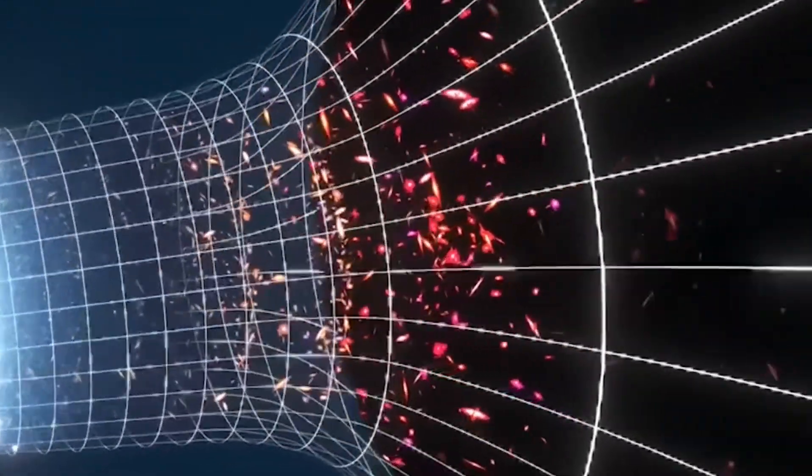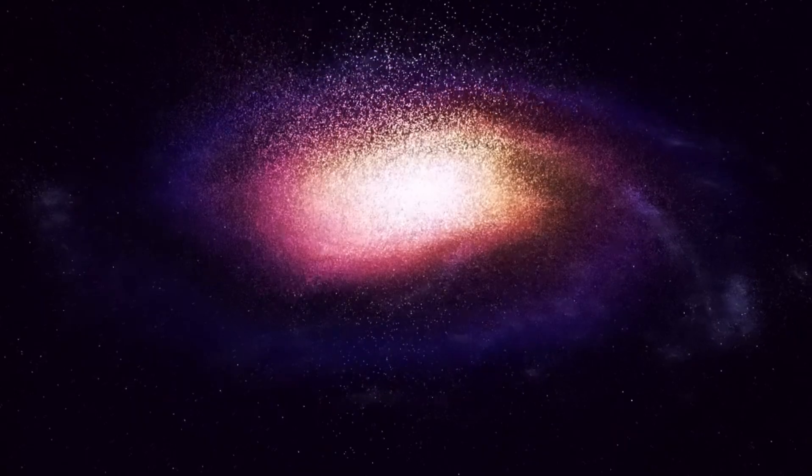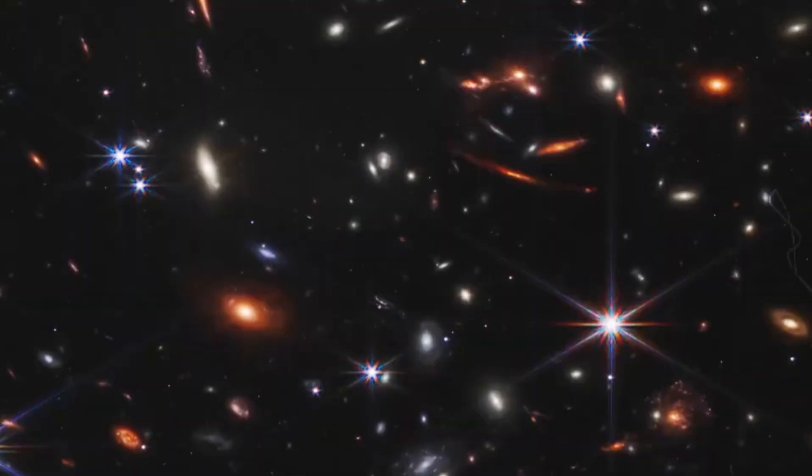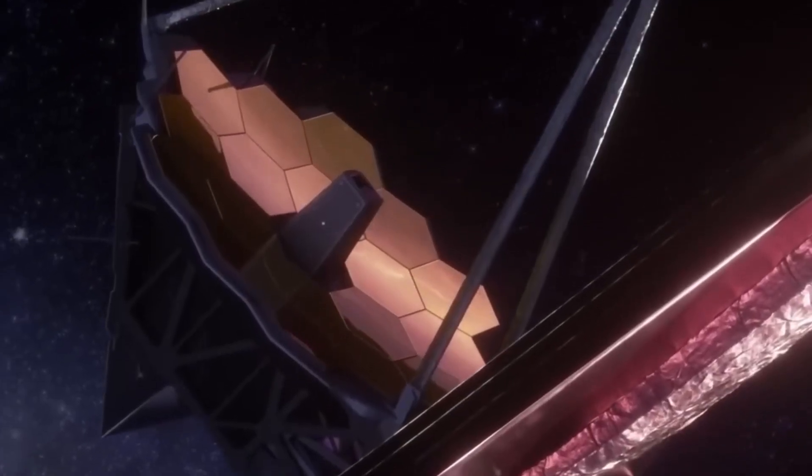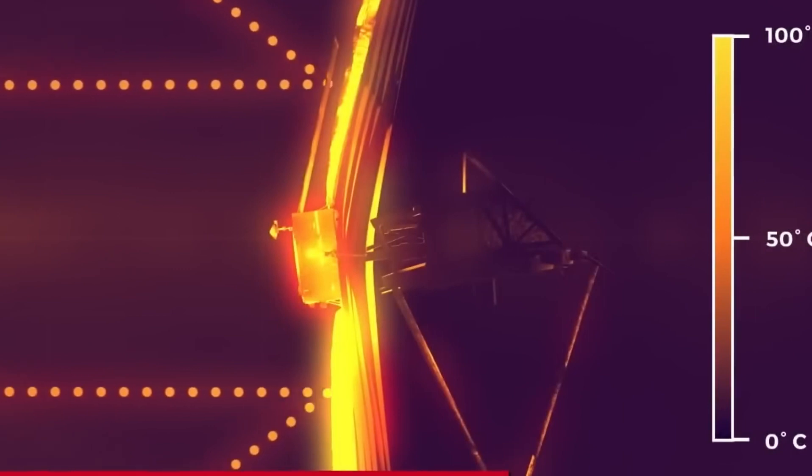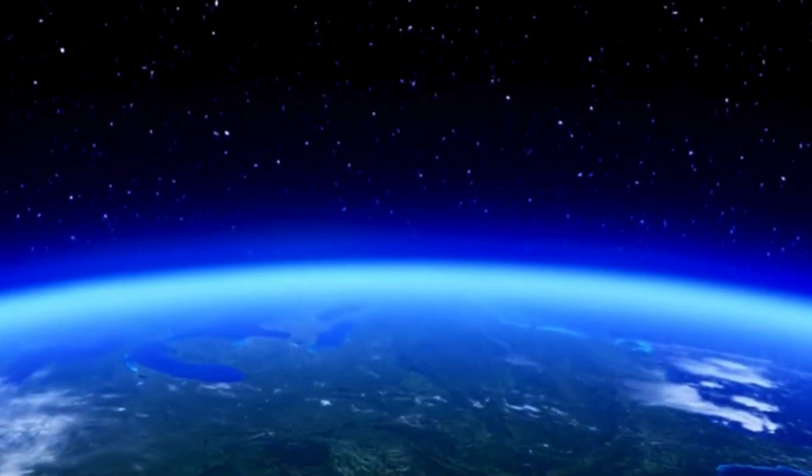The theory proposes that when galaxies form, they accumulate gas and dust that eventually collapses under gravity to form stars. However, the growth of the galaxy and its central supermassive black hole are interdependent, meaning that the black hole's growth can also influence the growth of the galaxy. In particular, the theory suggests that supermassive black holes can limit the growth of galaxies by expelling and heating up gas that would otherwise form new stars. This process, known as AGN feedback, occurs when the black hole accretes gas and dust from its surroundings, releasing powerful jets of energy that can affect the surrounding gas and dust.